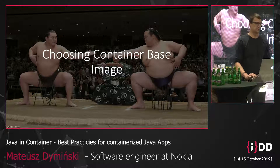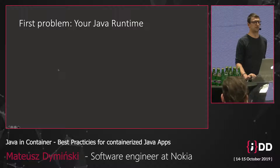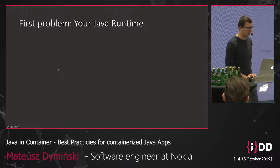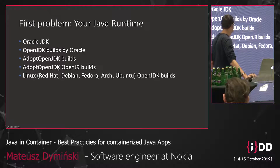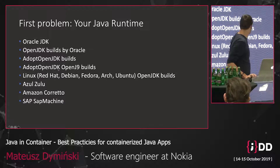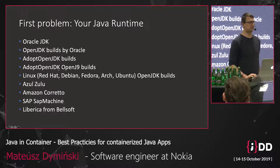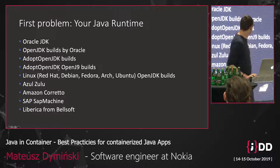We need a smarter way to choose the proper image for our Java workload. There are several options. The first problem is choosing the Java runtime — Oracle, OpenJDK, OpenJDK by AdoptOpenJDK, Red Hat, Azure, Amazon, SAP, Liberica — all these companies have their own Java runtime. Depending on whether you want to pay Oracle or run OpenJDK, you need to choose carefully.